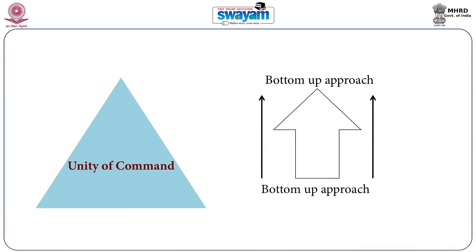Unity of command is from below to above, irrespective of the number of employees to whom you immediately report. While span of control tells you how many employees a superior officer can ideally control.